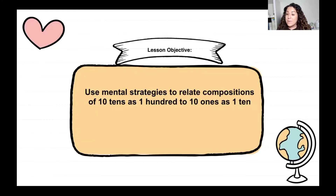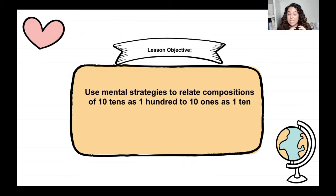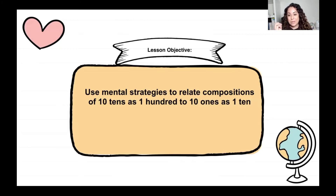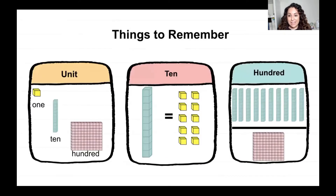What that means is that we're going to start trading 10 littles for one big. We know that whenever we have 10 of a unit, we can trade those 10s for a big — trade 10 littles for a big. So let's go ahead and talk about that.